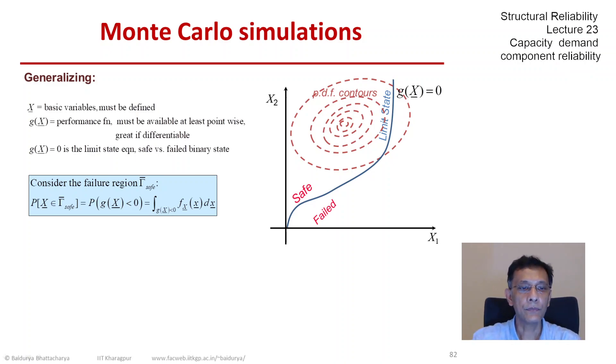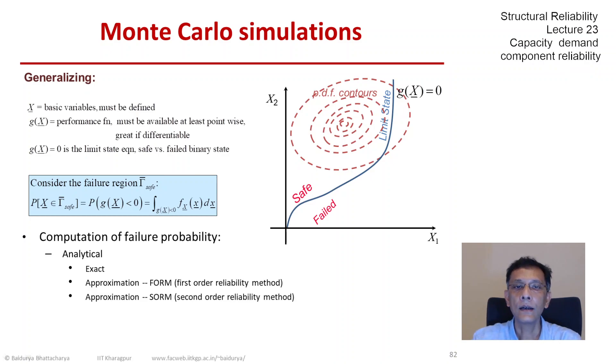This has been our problem setup and as I said, we look broadly at two kinds of methods of computing that failure probabilities. Simple problems can be solved analytically and we solve many of them. And then we started looking at approximate methods, the FORM, the SORM, and today we are going to look at simulation based methods.